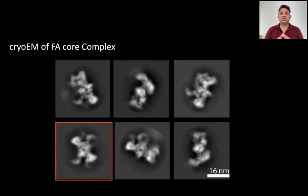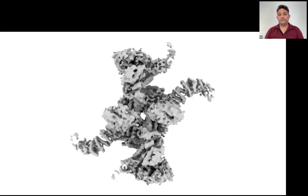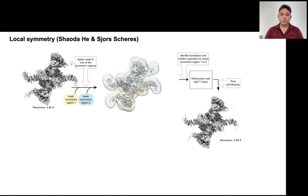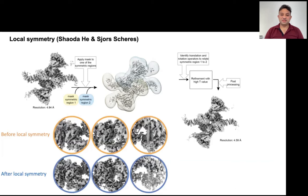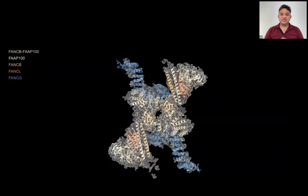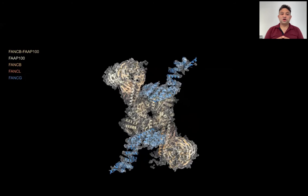Now let me take a detour here and show you again the 2D classes of the FA core complex. You may have noticed that there is a symmetric class in here. We determined its structure to about 5 angstrom. Because the complex has local regions that are symmetric, we took advantage of this symmetry. Shouda Hay from Schur's lab developed the local symmetry algorithm to improve the resolution for this symmetric region. We improved the resolution from 5 angstrom to 4.6 angstrom, which is not much. But there was a remarkable improvement in appearance of densities after the application of local symmetry. This allowed us to build a model into the EM map. The model showed that this is a sub-complex of FA core, comprising two copies each of FANCB, FAP100, FANCL, and FANCG.